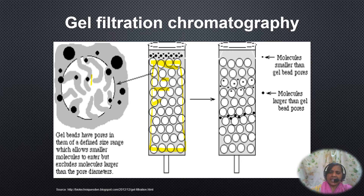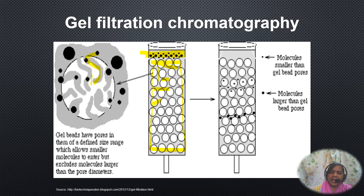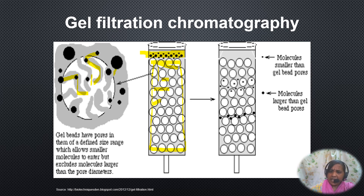The buffer present inside the pores of the bead is the stationary phase, and the buffer outside the pores or in between the beads is the mobile phase. As the sample with different sized particles is loaded onto the column and particles start moving, molecules that can enter the pore size of the bead will be retained and elute late, whereas larger molecules which cannot enter the pores will come out faster.